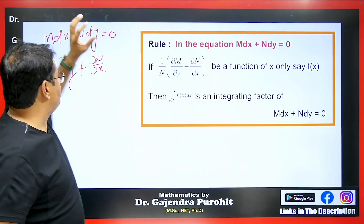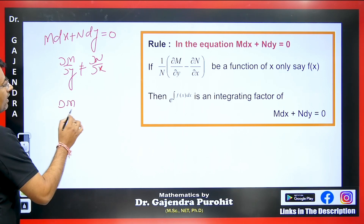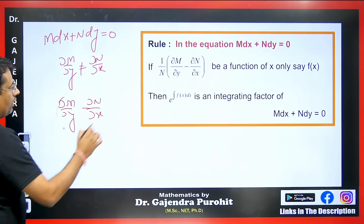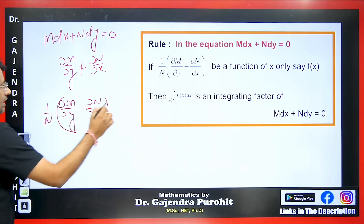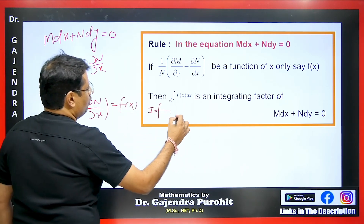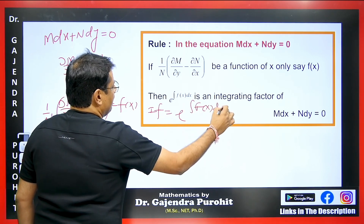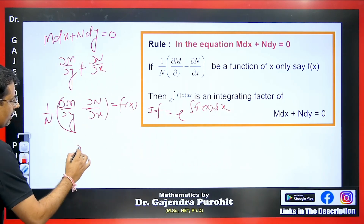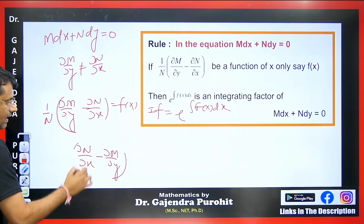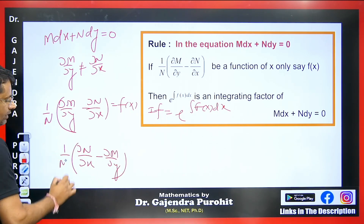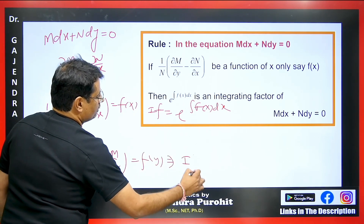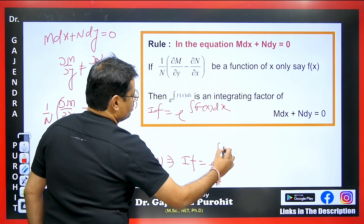For example, if we calculate ∂M/∂y and ∂N/∂x and take their difference — that is (∂M/∂y − ∂N/∂x)/N — and if we get this as a function of x, then the integrating factor is e to the power of the integration of f(x) dx. Conversely, if we compute (∂N/∂x − ∂M/∂y)/M and this is a function of y, then the integrating factor is e raised to the power of the integration of f(y) with respect to y.